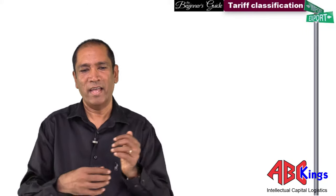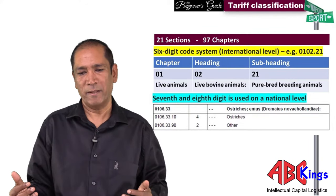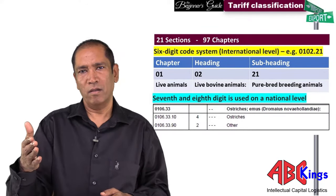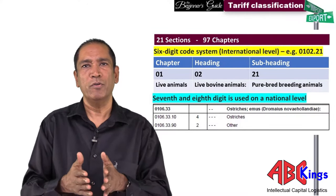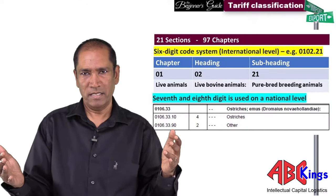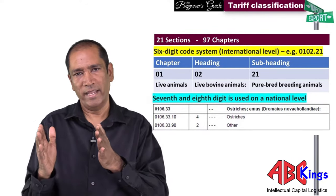The HS commodity description and recording system is developed by the World Customs Organization. The nomenclature has 21 sections, 99 chapters, and within the chapters there are headings. For example, a tariff code like 0102.21 means: 01 is chapter 1, 02 is the heading within the chapter, and 21 is the subheading within the heading. So the tariff heading has three parts: the chapter, the heading, and the subheading.